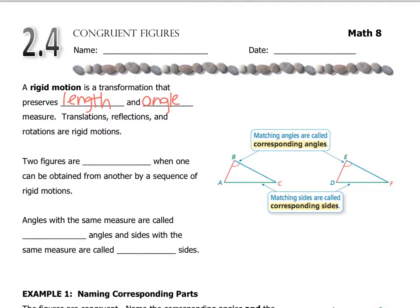Two figures are what we call congruent when one can be obtained from another by a sequence of rigid motions. So any combination of translations, reflections, and rotations all creates these things called congruent figures.